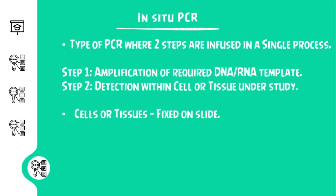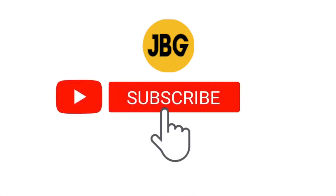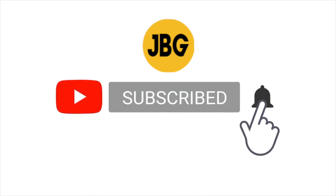The last type in part one is in situ PCR. The main advantage of this technique is that the PCR process takes place inside the cells or tissues. This enables us to carry out the PCR inside the cell and then detect the products produced within the cell. The cells or tissues are laid on slides which can later be examined. So that's all for PCR types part 1. Stay tuned for part 2.